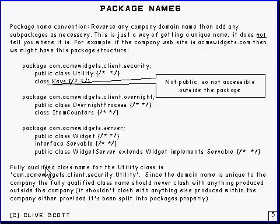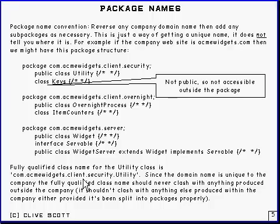Right now, if you take a look at the class Utility up here for instance, it's got what's called a fully qualified name, and that fully qualified name is com.acmewidgets.client.security.utility. And that's the fully qualified name of the Utility class there.